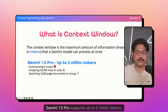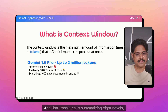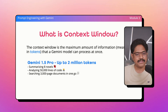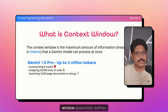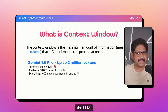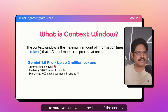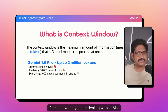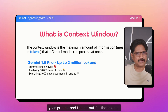For example, Gemini 1.5 Pro supports up to 2 million tokens. That translates to summarizing 8 novels, analyzing 50,000 lines of code, and searching a 3,000-page document in one go — this is massive. The context window defines what is acceptable as input to the LLM and also the maximum amount of content the LLM can generate. When sending a prompt to the LLM, make sure you are within the limits of the context window. Tokens are the new currency, so you have to optimize your prompt and output for tokens.